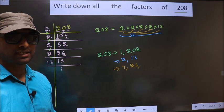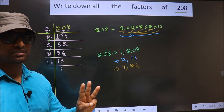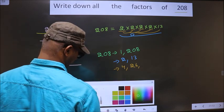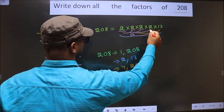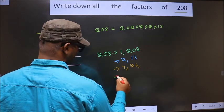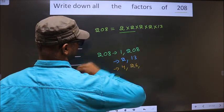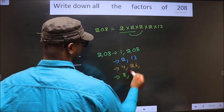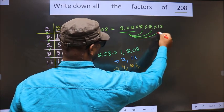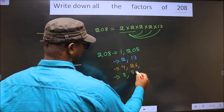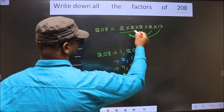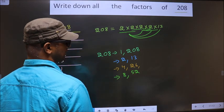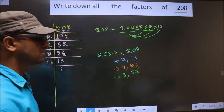Now we should take the combination of 3 numbers. First I fix these 2 numbers: 2 × 2 is 4. Combine with the next 2 — 4 × 2 is 8. If I combine with this 2 again, still 8. When I combine with 13, 4 × 13 is 52. So no more combinations possible.